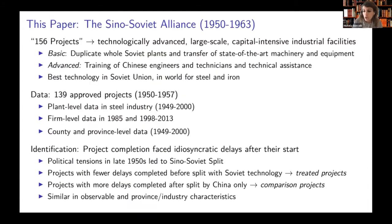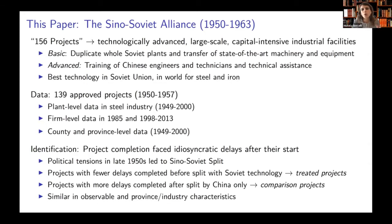To answer these questions, we use evidence from a unique historical episode, which is the Sino-Soviet alliance — an alliance between communist China and the Soviet Union that lasted between 1950 and 1963. It involved a bunch of different interventions, including a massive technology transfer program that aimed at the construction of the so-called 156 projects.